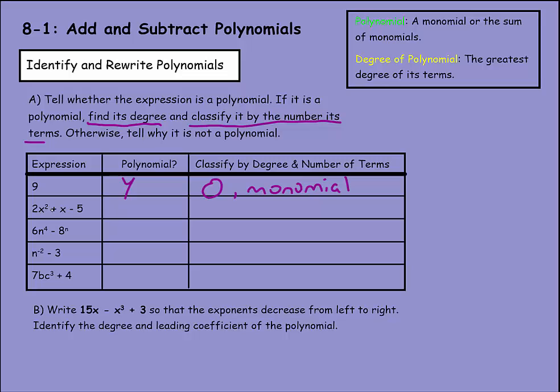Here I have 2x² + x - 5. All these are monomials, so that would be yes, it is a polynomial. Since this is being added and not multiplied, I only count this one for my degree, because it's the biggest. So x² is in the second degree, and that would be a binomial.